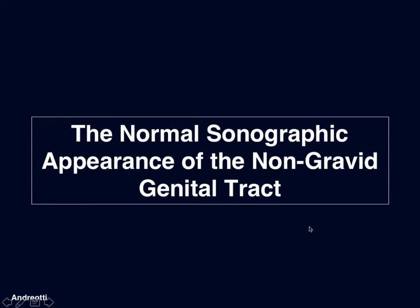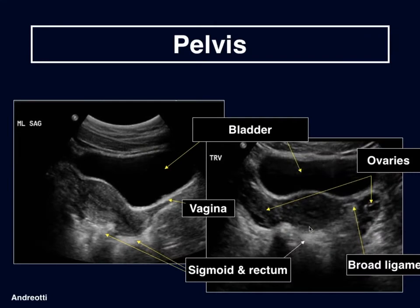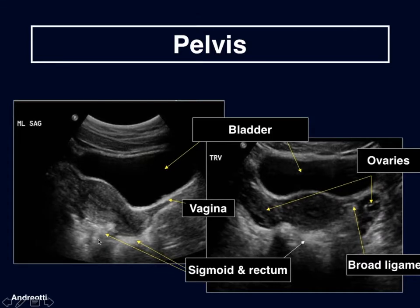Let's look at the normal sonographic appearance of the non-gravid genital tract. Our typical transabdominal image shows the bladder anterior, uterus in the sagittal plane — seen posterior to the distended bladder and anterior to the rectum and sigmoid back here, which is seen only as dirty shadowing due to the gaseous contents of the bowel. We could also see that behind the uterus in the transverse plane.